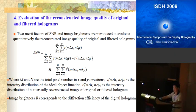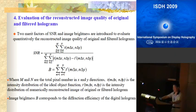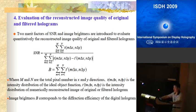In this section, we quantitatively evaluate the reconstructed image quality of the original and filtered holograms. Two metrics, signal-to-noise ratio and image brightness, are introduced. Image brightness B is the summation of all pixel intensities, which corresponds to the diffraction efficiency of the digital hologram.